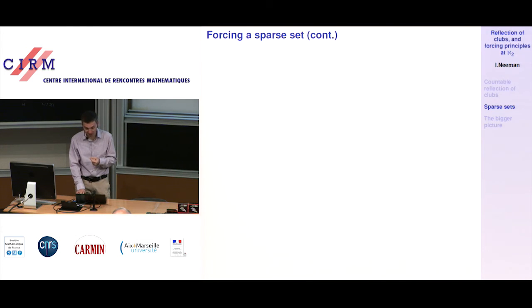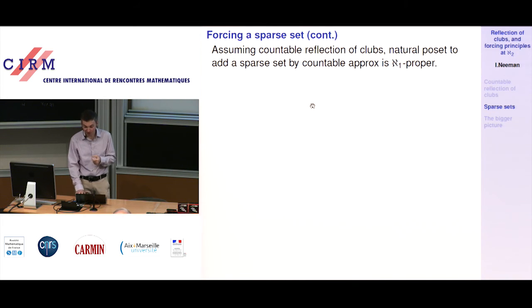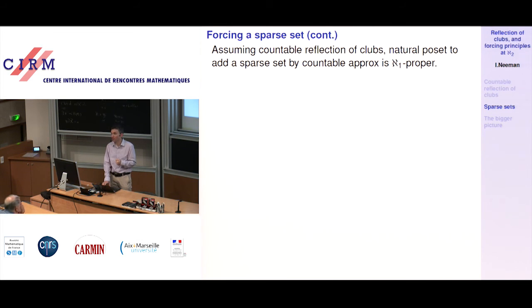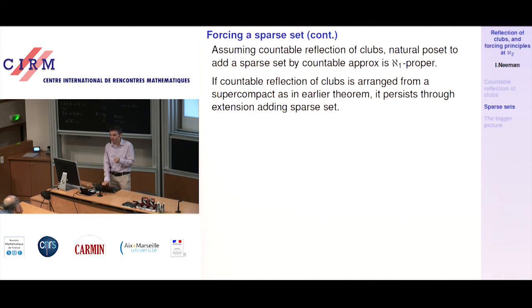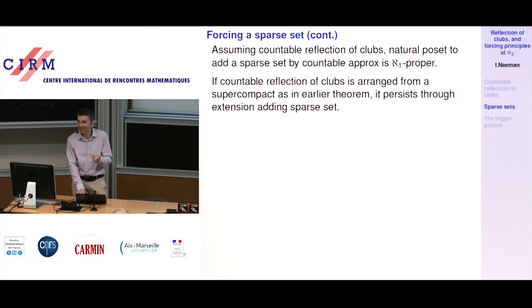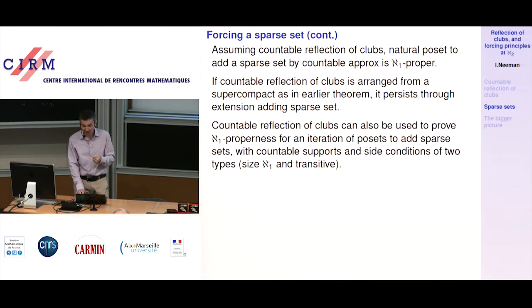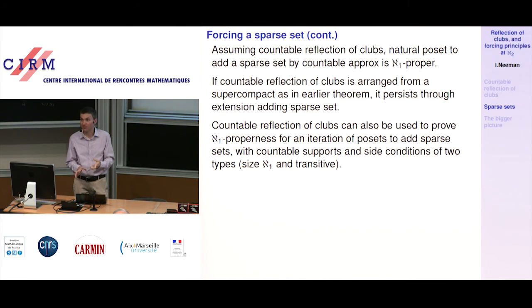So: assuming countable reflection of clubs, the natural poset to add a sparse set by countable approximations is aleph_1-proper. If countable reflection of clubs is arranged from a supercompact as we did, it persists to any nice extension — where nice means you can extend embeddings and the factor poset is countably closed. After you force to add this sparse set, you still have countable reflection of clubs, so you can force to add another sparse set and continue. Countable reflection of clubs also lets you go through iterations with countable supports and side conditions to ensure properness, via a very similar argument.